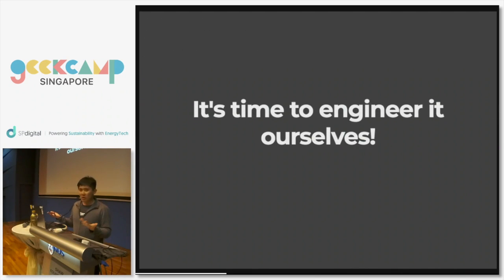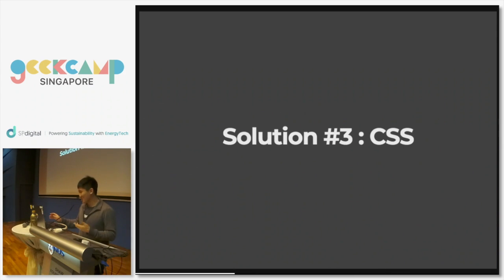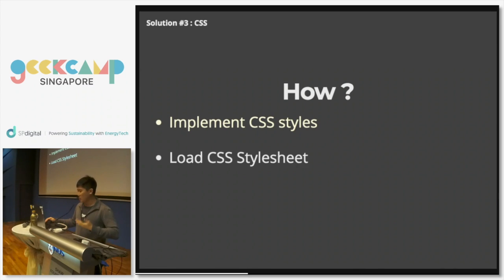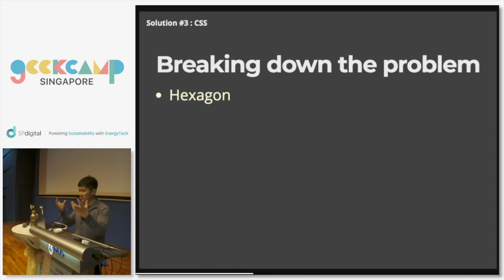So if solutions on the path of least resistance like GIFs don't work, and we can't choose a third-party library as our long-term solution, let's try and implement it ourselves. Side note: when I was looking at trigonometry on Wikipedia, my manager saw me and asked why I was reading trigonometry — it's not part of your job. But it still came out with something awesome. So let's implement this problem with CSS. How do you use CSS? It's just configuration — put it in a stylesheet, load it in your webpage, and you're done. But the core problem is how do we create that animation in CSS.